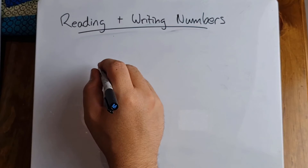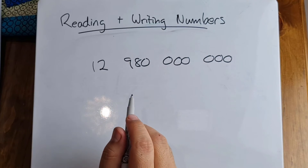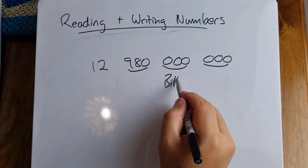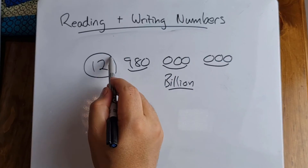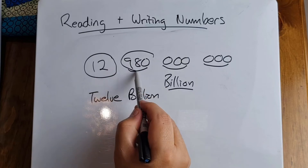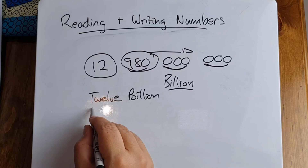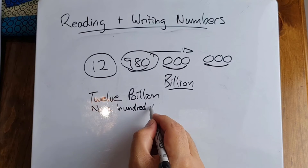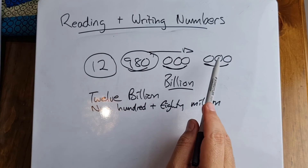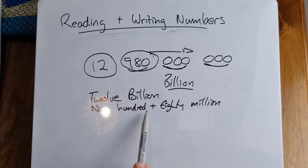Let's look at two more examples. I'm going to go with 12, then 9, 8, 0, 0, 0, 0, 0, 0, 0, 0. Let's break it down: we've got 3, we've got 6, we've got 9. When we have nine zeros, we're talking about billion. How many billion? Looking at this number over here, that tells me we have 12 billion. But does it end there? No. We've got this number over here — 980. Looking to the right of this number, how many zeros do we have? Three, six — that means it's 980 million. So this number is 12 billion, 980 million.